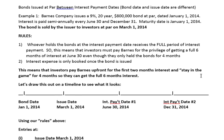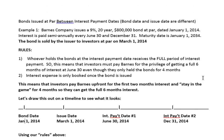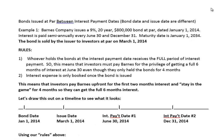Hi folks, welcome to this video on bonds issued at par between interest payment dates. This means that the bond date and the issue date are different. Let's look at this example to see how, when the bond date and the issue date are different for a par value bond, what impact that has on our journal entries.